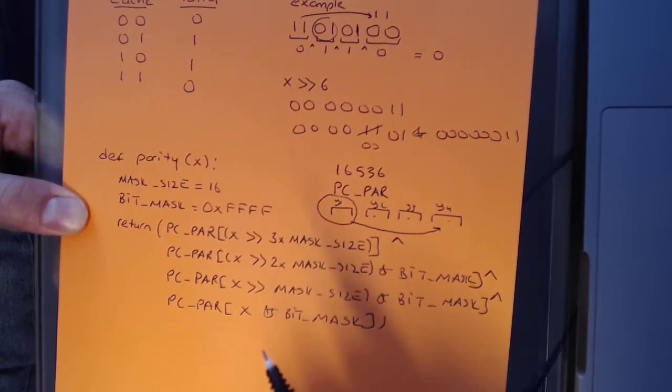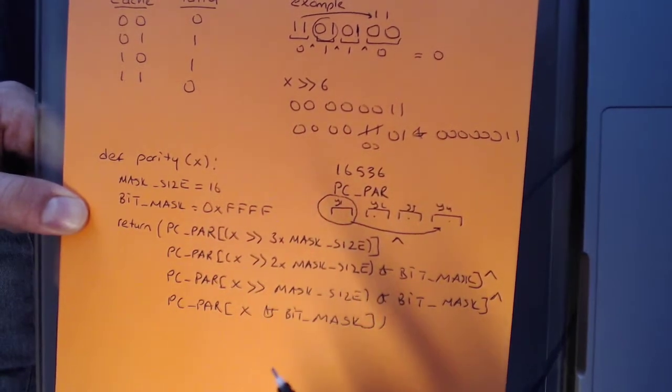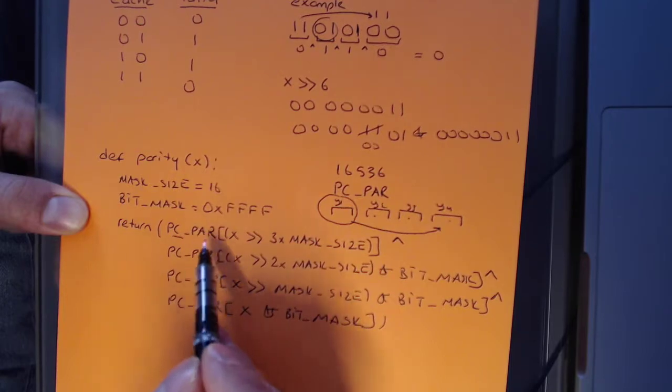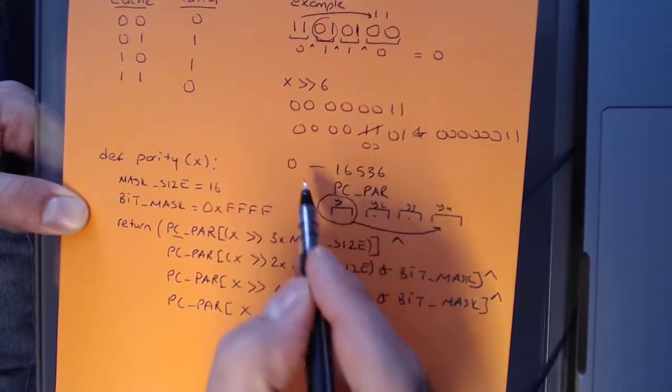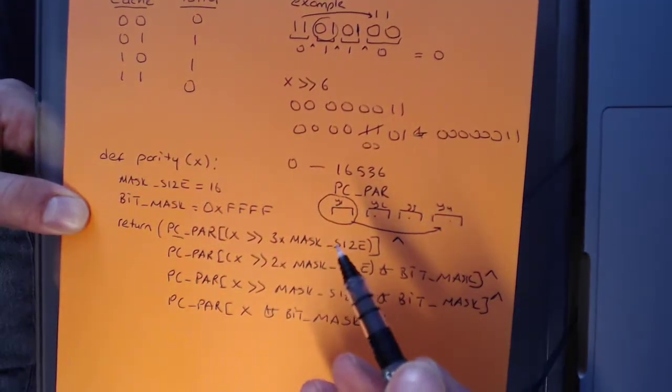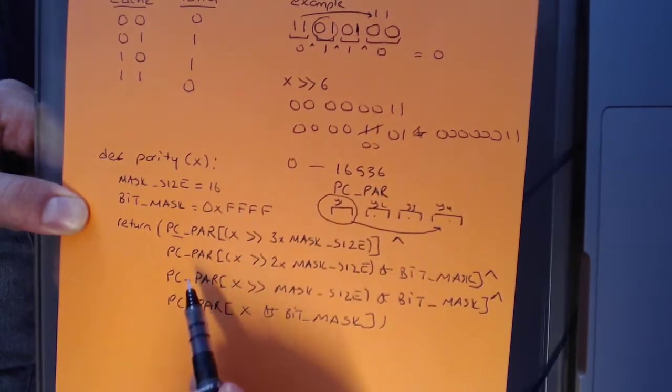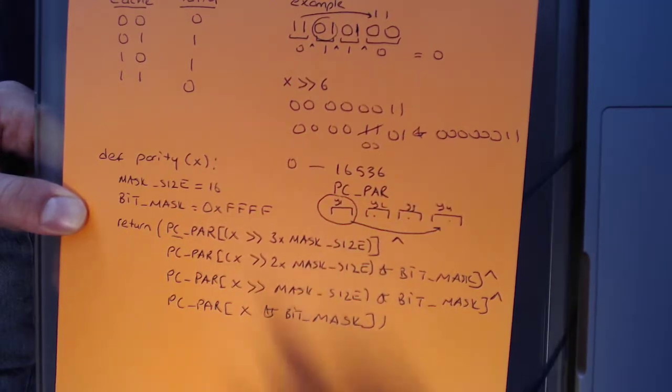When you have a lot of words that you need to calculate parity for, this is a great approach to improve your performance. The way you would calculate the pre-computed cache is you would go from 0 to 65,536 and use one of the parity calculation functions that we wrote in version 1 or version 2. And then once you have the pre-computed cache, then you can use this approach to calculate it. This is the cache approach of the parity problem, and I hope this makes sense.